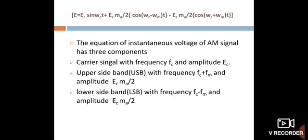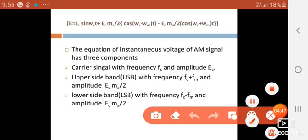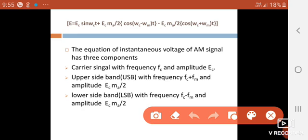Observe this equation — the instantaneous voltage of amplitude modulated wave has three components. The first component is Ec sin(ωc t): the carrier signal with frequency fc and amplitude Ec.